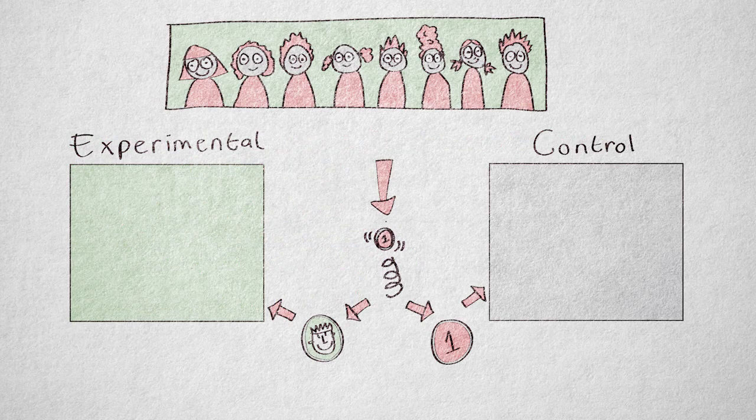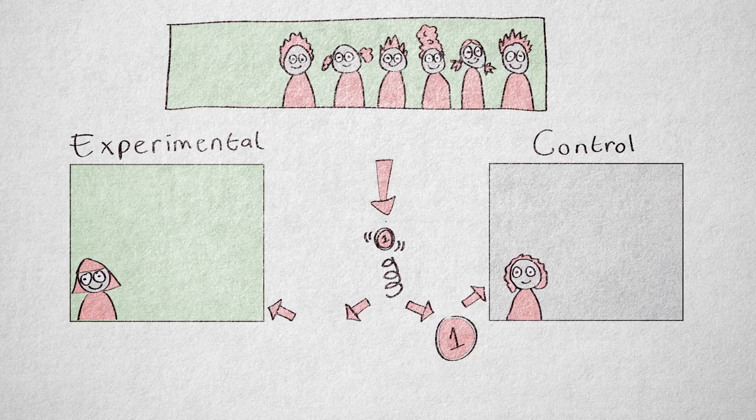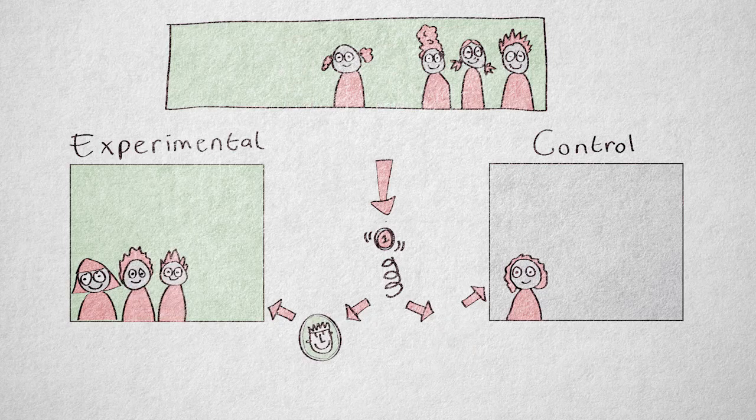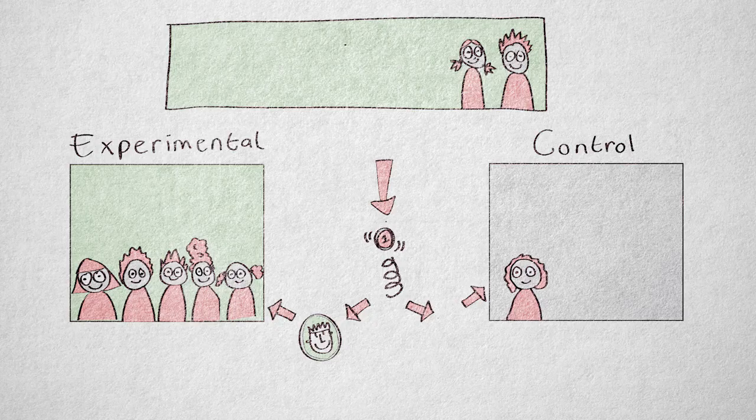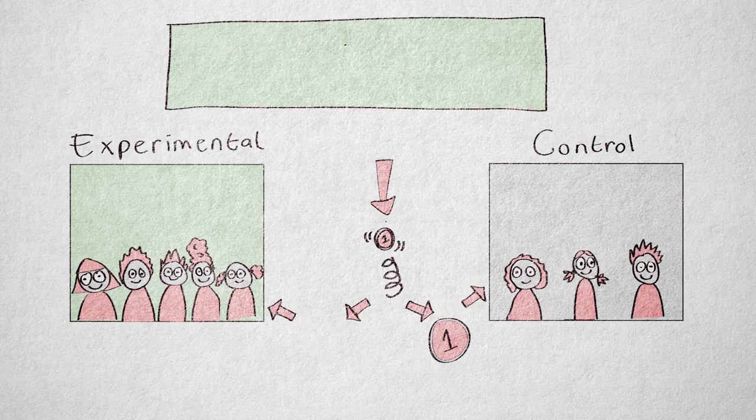Suppose there are only four boys and four girls to assign to the two groups. It's not hard to imagine that the coin toss will come out something like this: first girl heads, second girl tails, first boy heads, second boy heads, third boy heads, third girl heads, fourth girl tails, fourth boy tails.